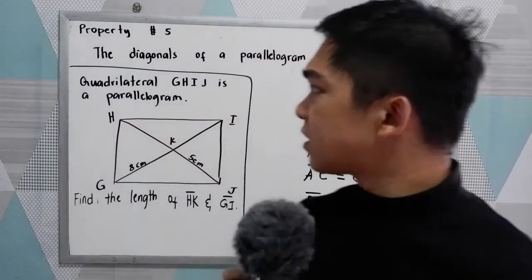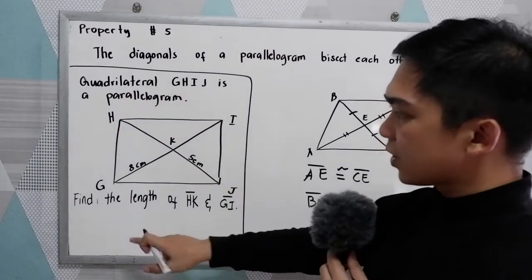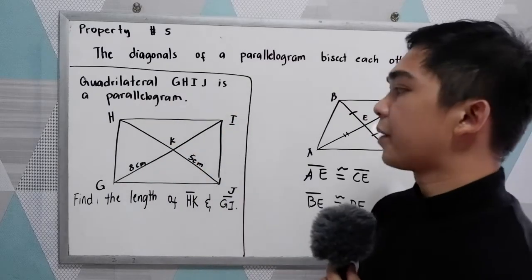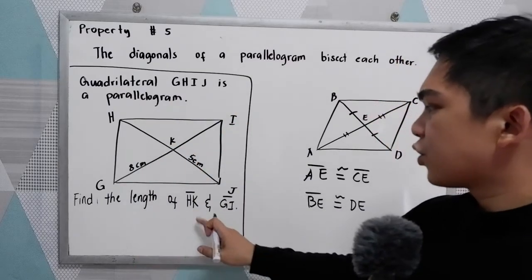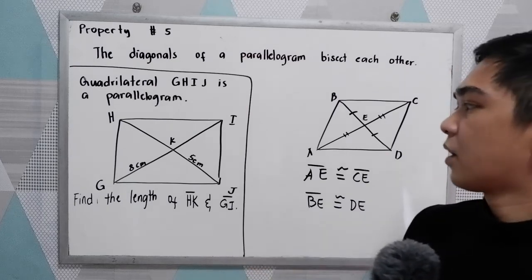To understand, let's have our example number 1. We have quadrilateral GHIJ. GHIJ is a parallelogram. Find the length of HK and GI.